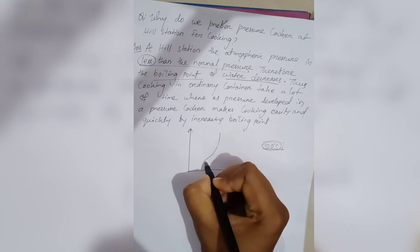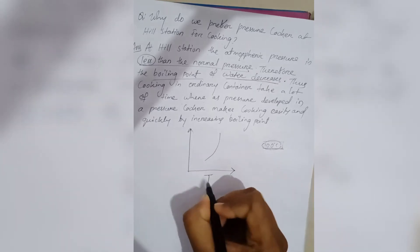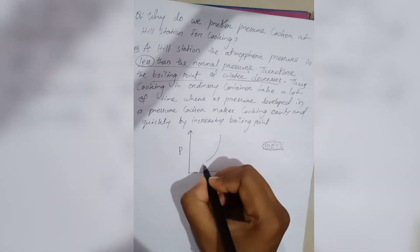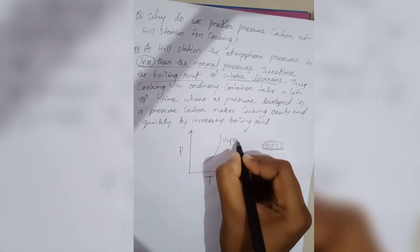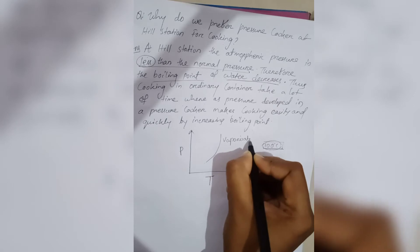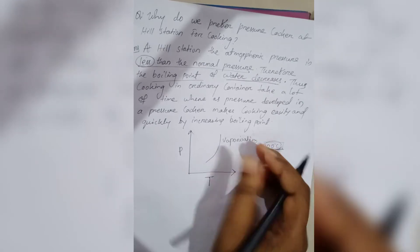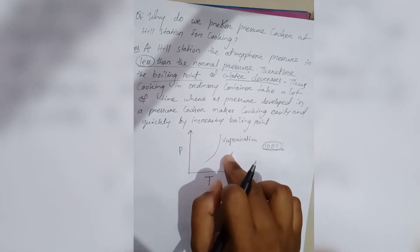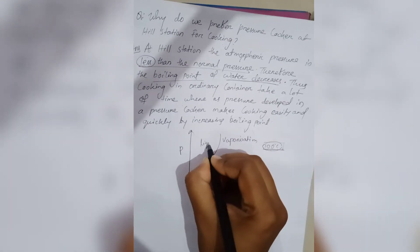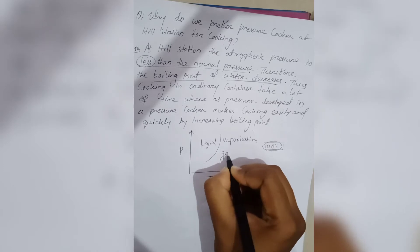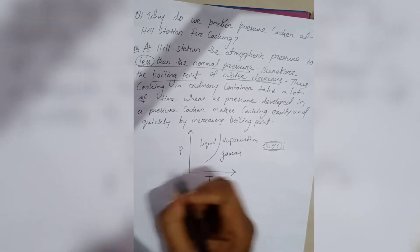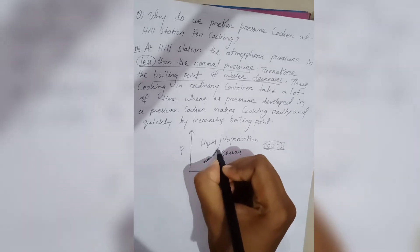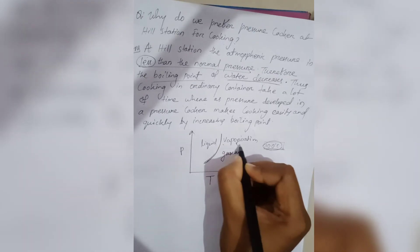This is the vaporization curve. This is a temperature versus pressure diagram graph, and this is the vaporization curve. Vaporization is the process by which a liquid converts into a gaseous state. This side is liquid, and this side is the gaseous state.